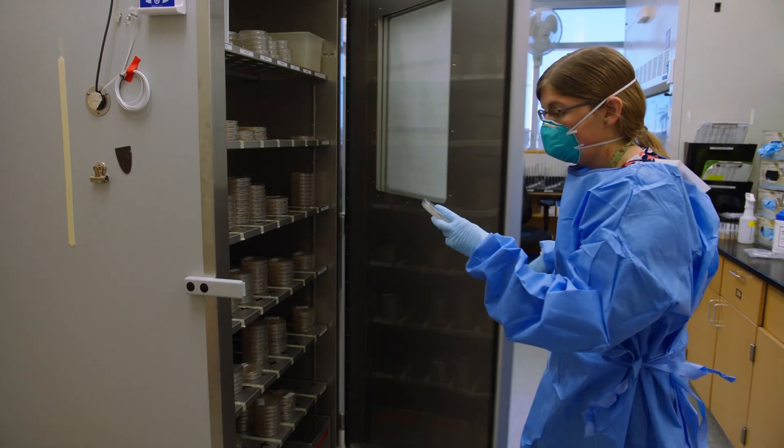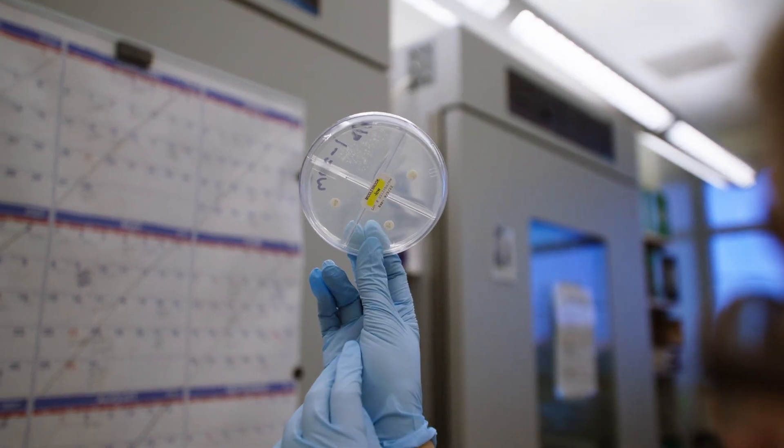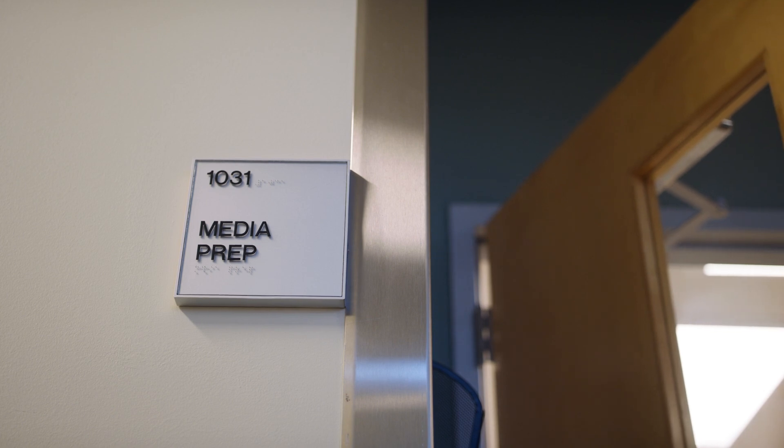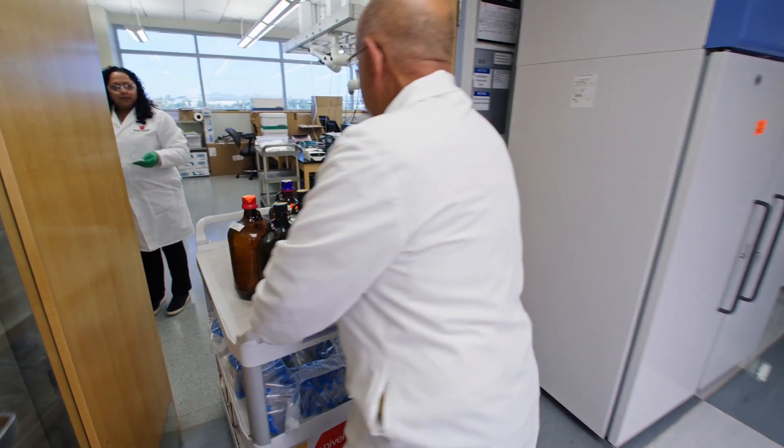A sample that tests positive will be placed in each section of an unusual four-quadrant plate. These plates are made in the media prep room just downstairs to insulate the tuberculosis program from supply chain disruptions.